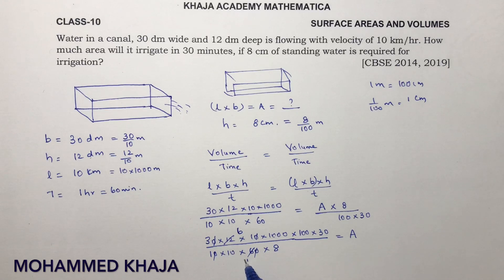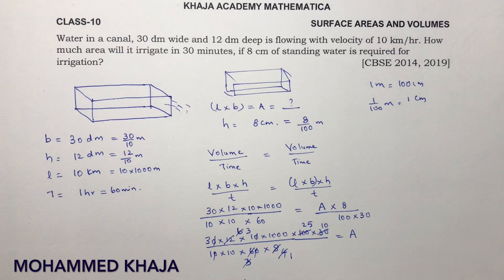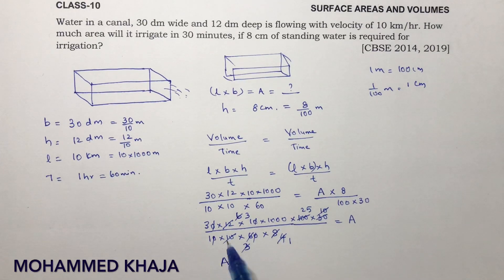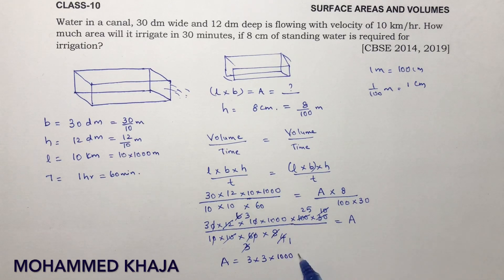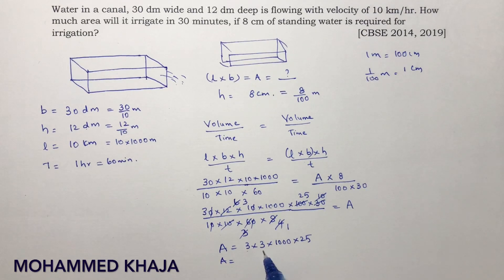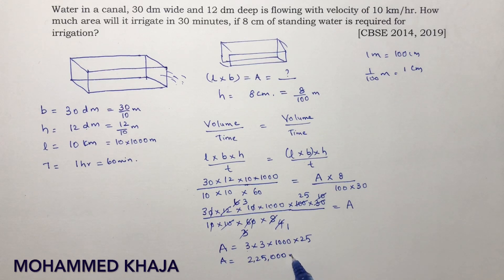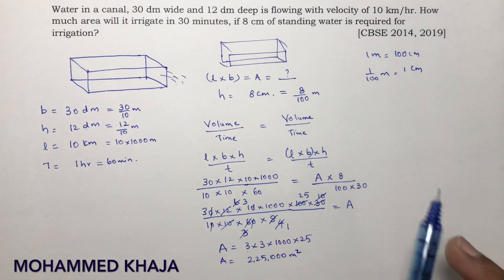After canceling step by step, you are left with 3 × 3 × 3 × 3 × 1000 × 25. So area = 9 × 25 × 1000 = 2,25,000 square meters. This is how much area the water will cover in half an hour when flowing from the canal.